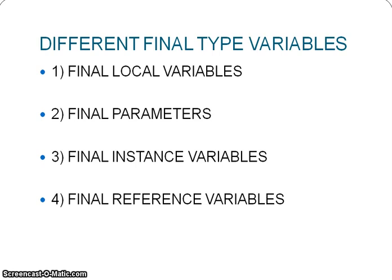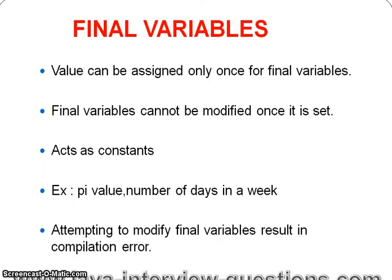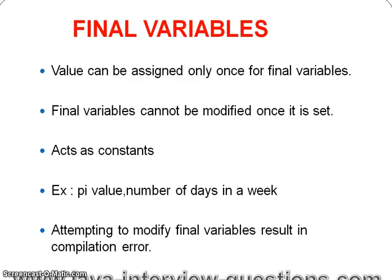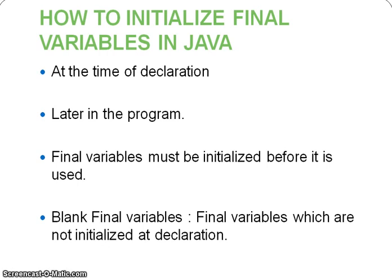Let's recap: final means once the value is set, we cannot change it — it acts like a constant. We can use final in different contexts: variables, methods, and classes. For final variables, once values are assigned, we cannot modify them; attempting to do so results in a compilation error. We can initialize final variables at the time of declaration or later in the program. Variables initialized later rather than at declaration are called blank final variables.